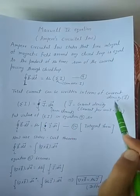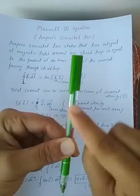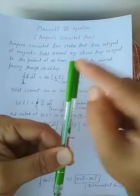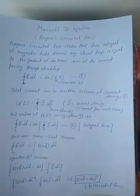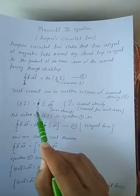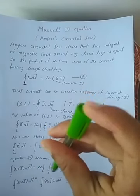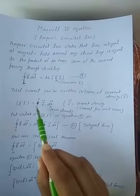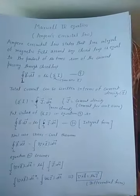The total current can be written in terms of current density — current per unit cross-sectional area. So total current equals the surface integral of J dot dA, where J is the current density and dA is the area element. This integral is an open integral, not a closed integral, so this represents an open surface.